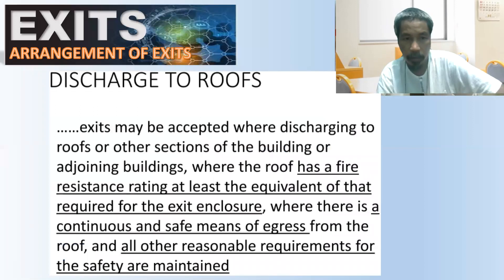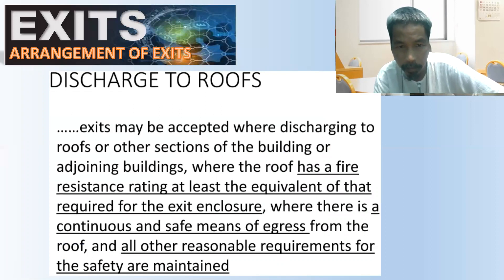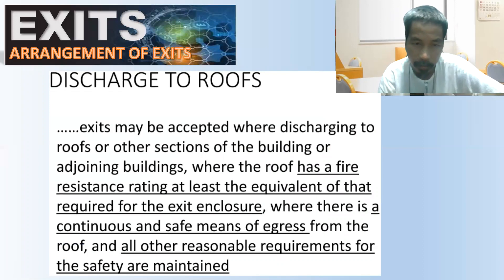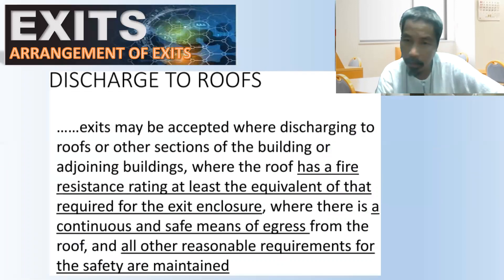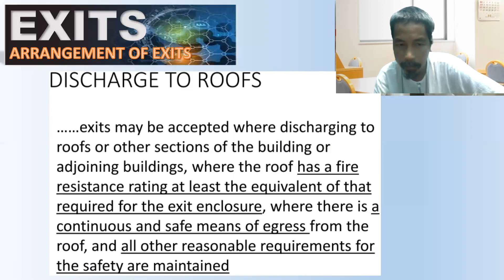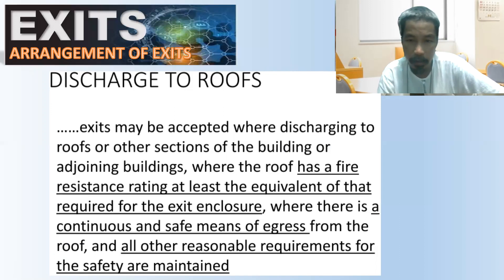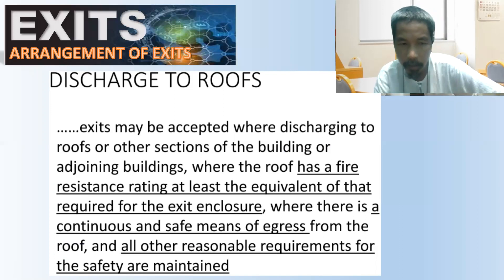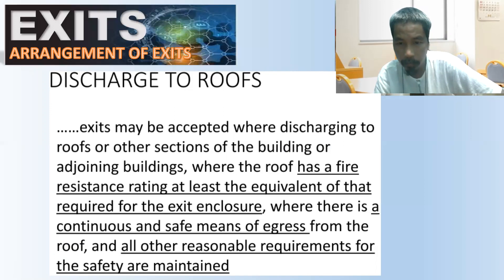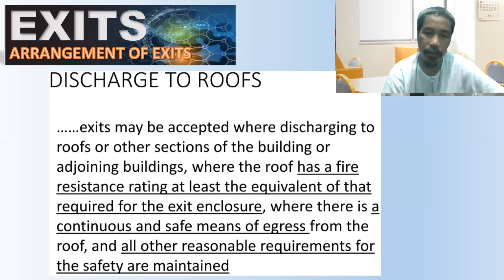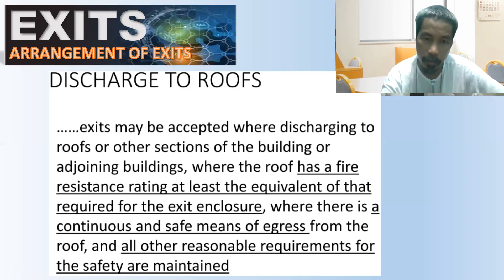An exit may be accepted through a roof where it connects two rooms or other sections of the building, or adjoining buildings, provided the roof has a fire-resistance rating at least equivalent to that required for an exit enclosure. There must also be a continuous means of egress from the roof meeting all other reasonable requirements.